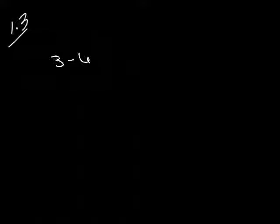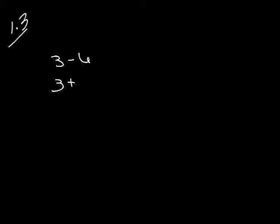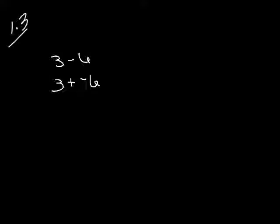Let's work on adding positive and negative numbers. At this point we're not going to do any subtraction of negative numbers — we're just going to add them. So instead of saying 3 minus 6, we're going to write it as an addition: change that minus to a plus and put a minus on the 6. So you have 3 plus negative 6 instead of 3 minus 6.